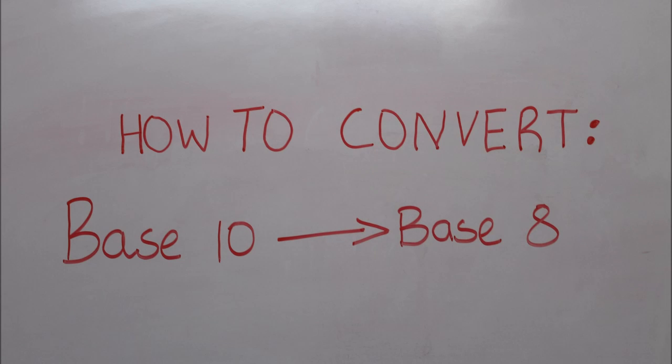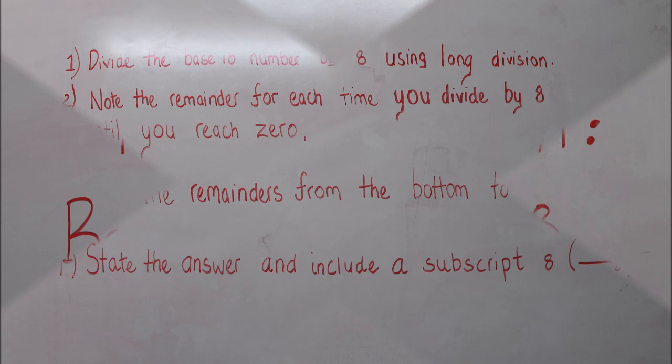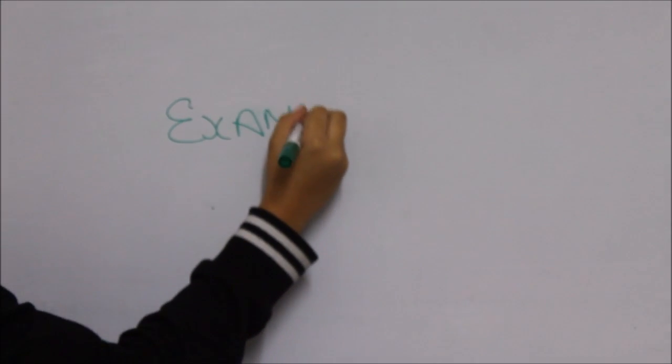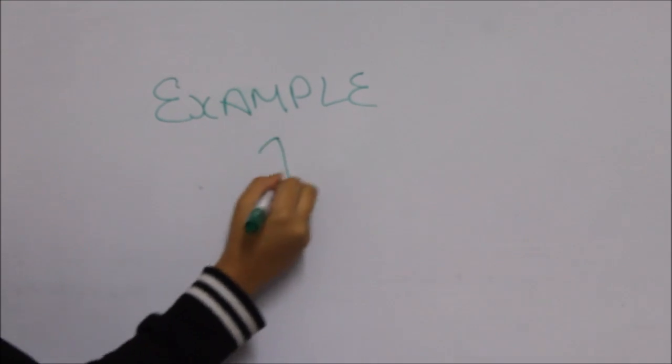How to convert base 10 to base 8. Step 1: Divide the base 10 number by 8 using long division. Step 2: Note the remainder for each time you divide by 8 until you reach 0. Step 3: Read the remainders from the bottom to the top. Step 4: State the answer and include a subscript 8.